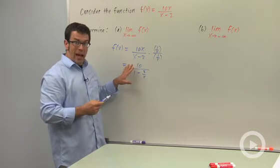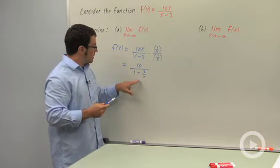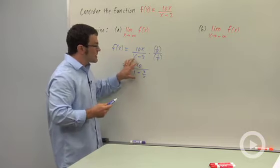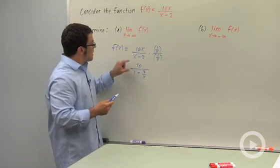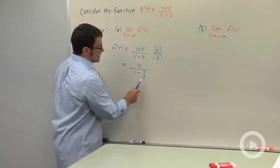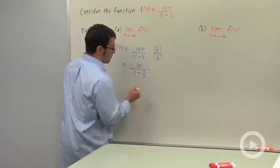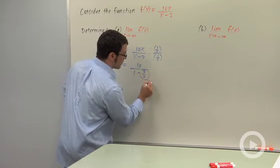It's a lot easier to see what happens as x goes to infinity when you look at the function written in this form. This is exactly the same function as this. But in this form, you can see that as x goes to infinity, this term is going to 0.